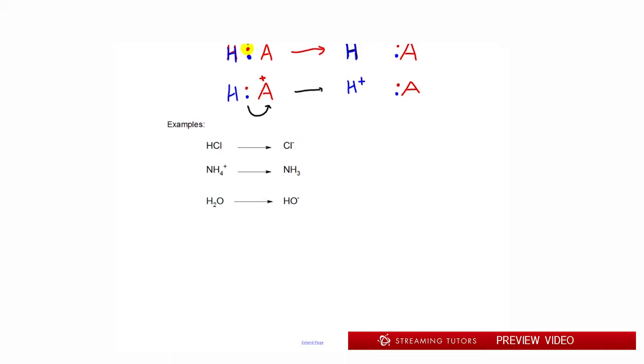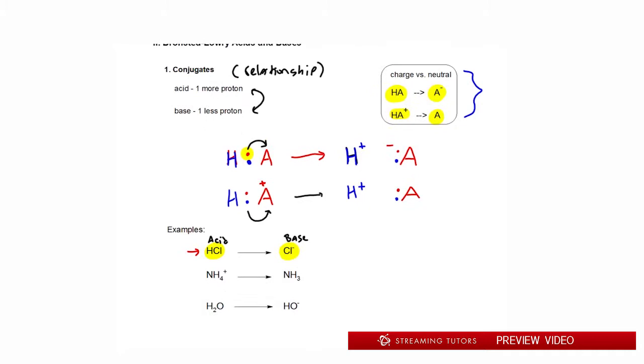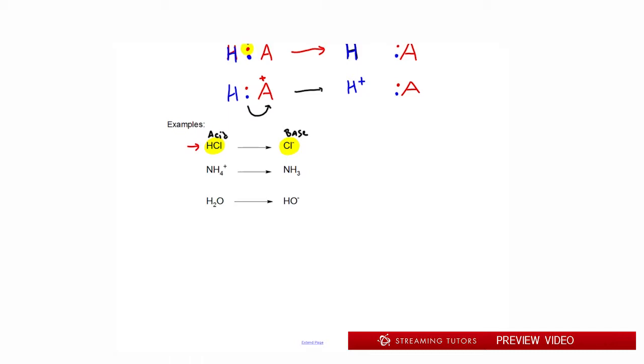Now, here are some real examples. If we look at the first one, we have HCl. And the only difference between this and after the arrow is that the Cl no longer has an H. So we know this right here must be the acid form, because it has an extra H. And this is the base form, the conjugate base, because it has no H. So one more, one less proton, that's the relationship. And the same thing applies here.